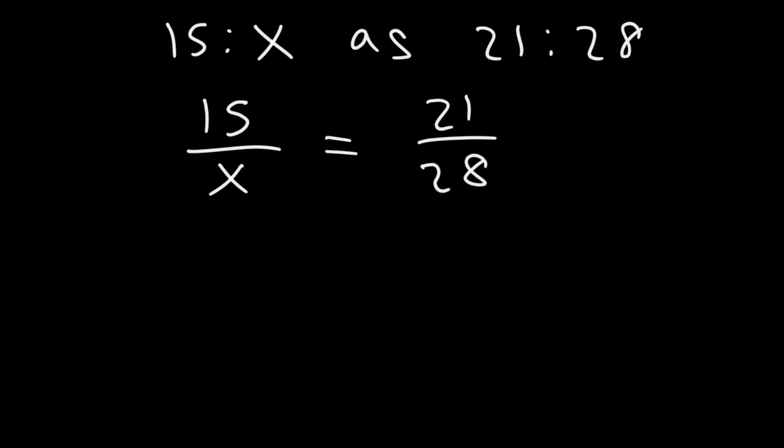Now, let's work on a math problem. Let's say that 15 to x is the same ratio as 21 to 28. So what is the value of x that will make these two ratios equivalent to each other? What would you do in a problem like this? How should we begin? Well, what I recommend is write the two fractions and put an equal sign between them. In order for these two ratios to be equivalent to each other, we know that the cross products have to be the same.